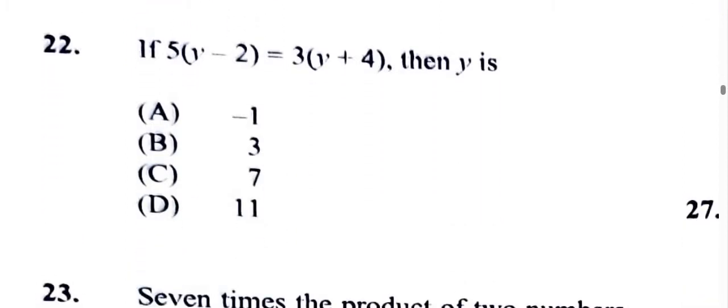So the best thing to do is to multiply all the brackets. 5 times y is 5y, 5 times 2 is 10, so that's negative 10. Equals 3 times y is 3y, and 3 times 4 gives us 12.